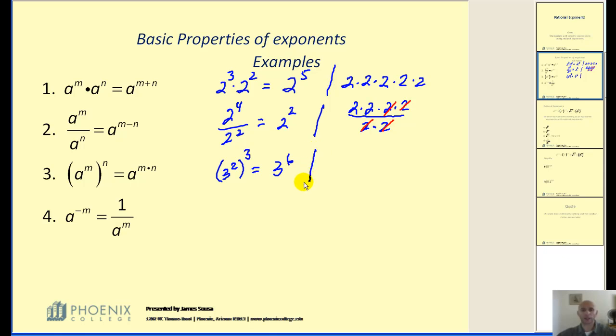Again, if I'm not sure, I can convince myself. I know that if something is raised to the third power, then that means I'm going to multiply it by itself three times. And from here, you can visualize you do have six factors of three.